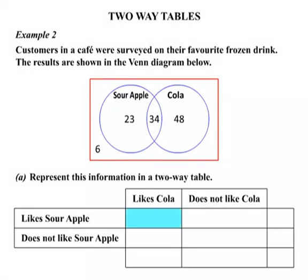The first cell covers those who like Cola and also like Sour Apple — those who like both. That's the crossover section in our Venn diagram: 34 customers. The next box covers those who don't like Cola but do like Sour Apple — that's the part of the Sour Apple circle with no crossover into Cola, giving us 23 customers.